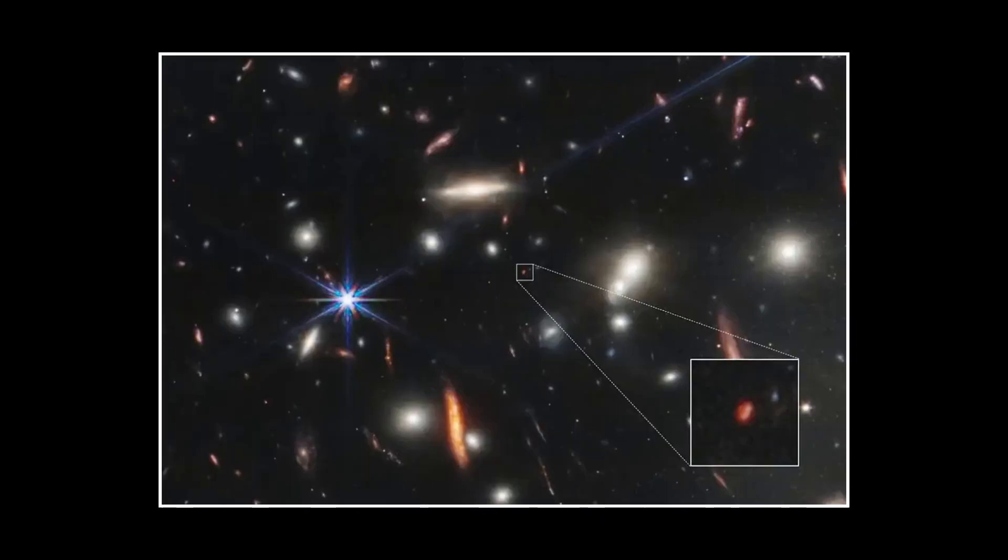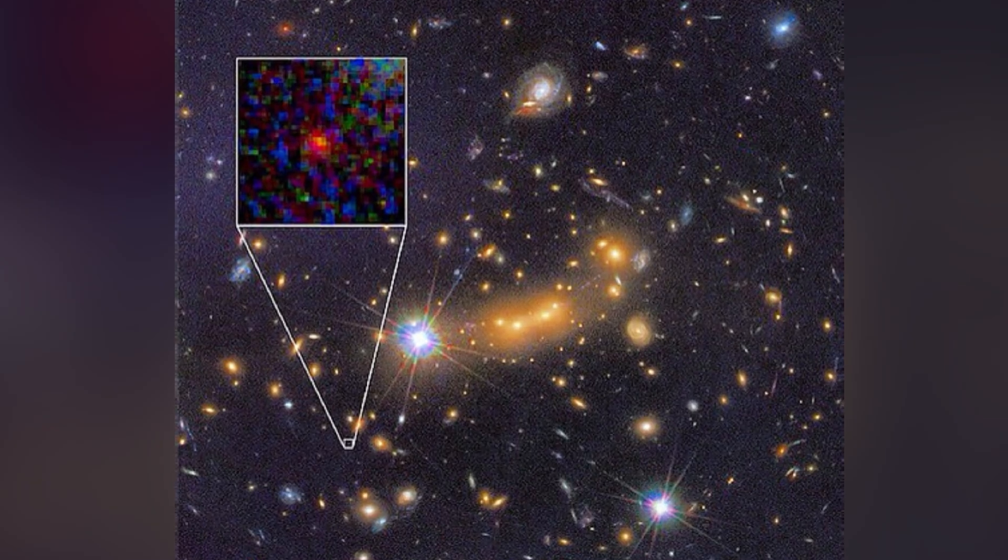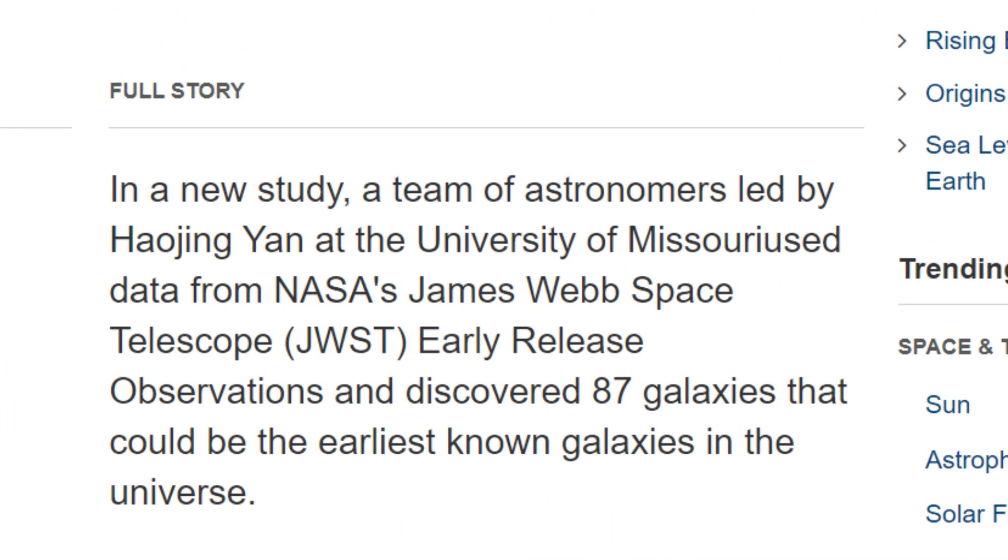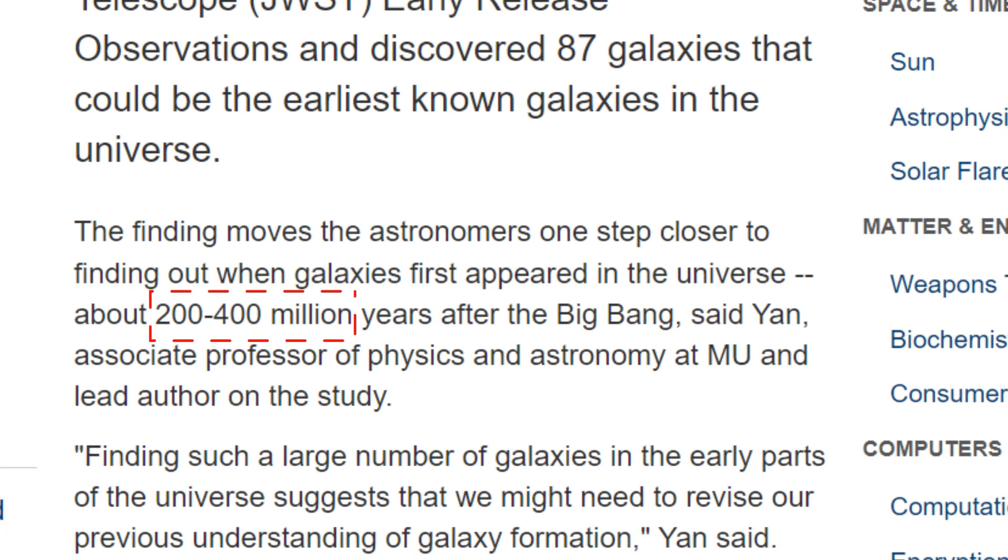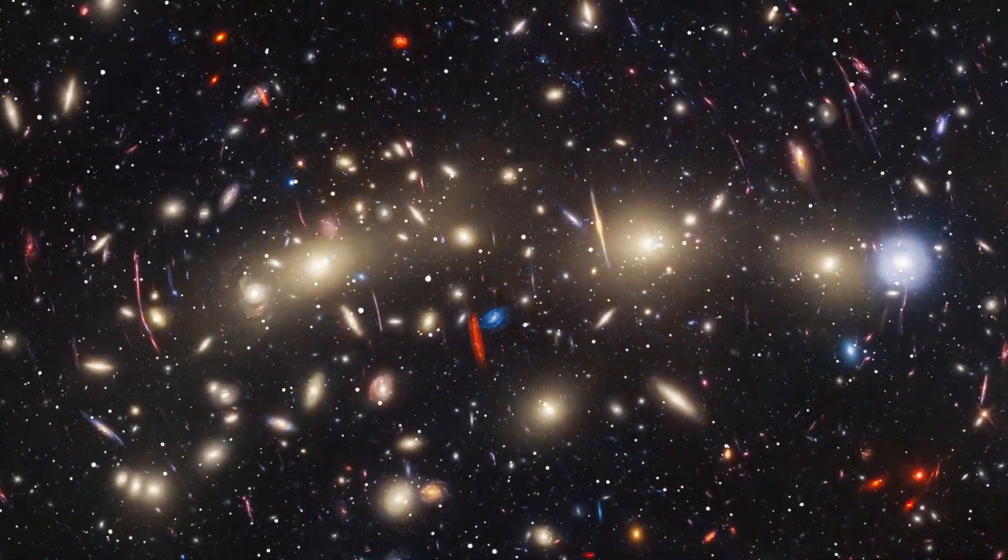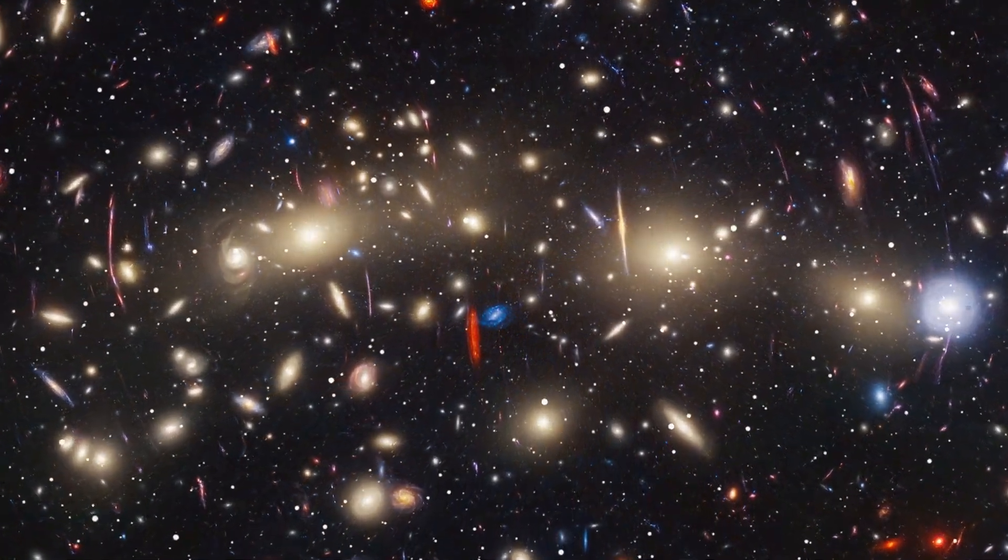Despite extensive efforts, scientists have yet to understand these anomalies. A recent study published in the Astrophysical Journal identified 87 galaxies that might have existed just 200 to 400 million years after the Big Bang.